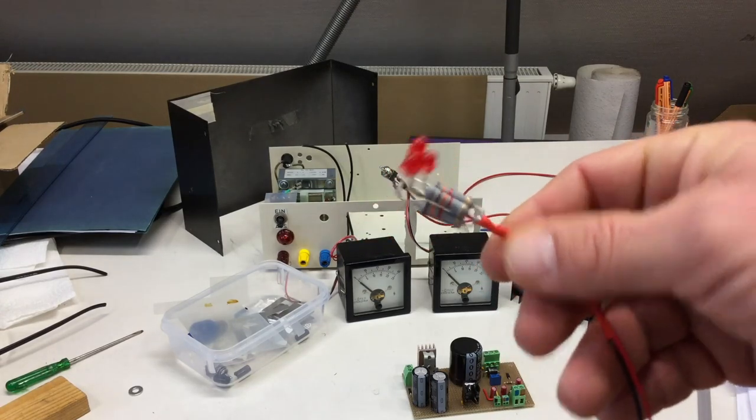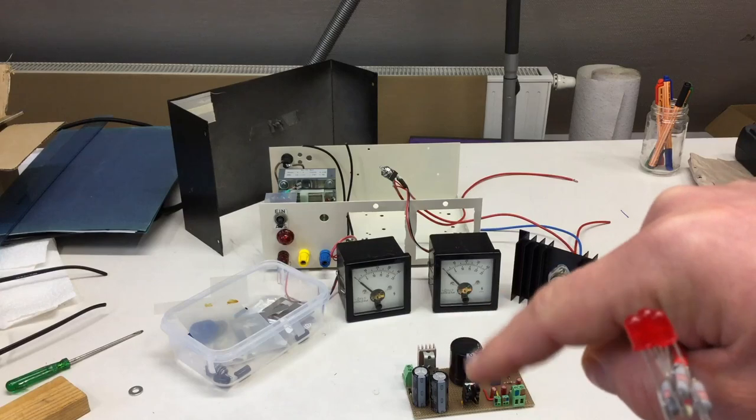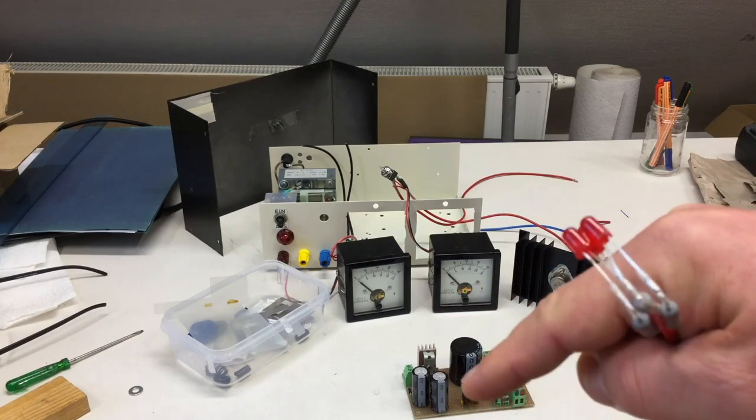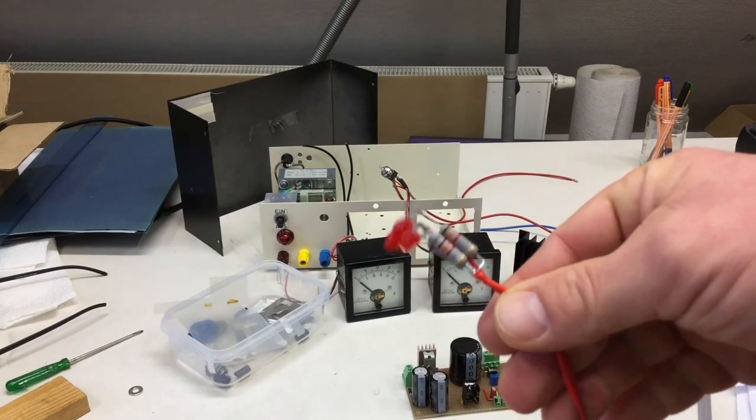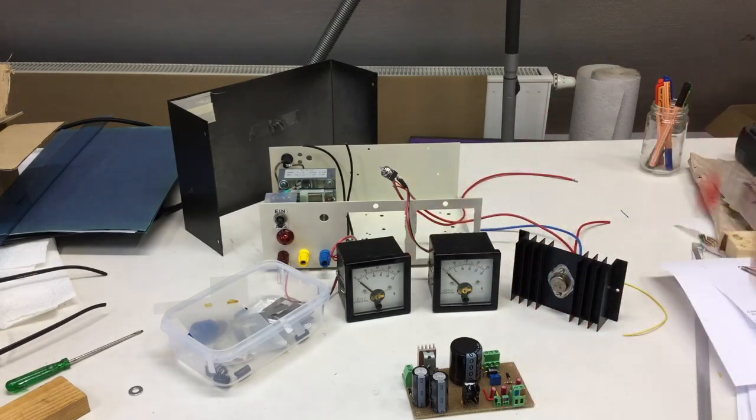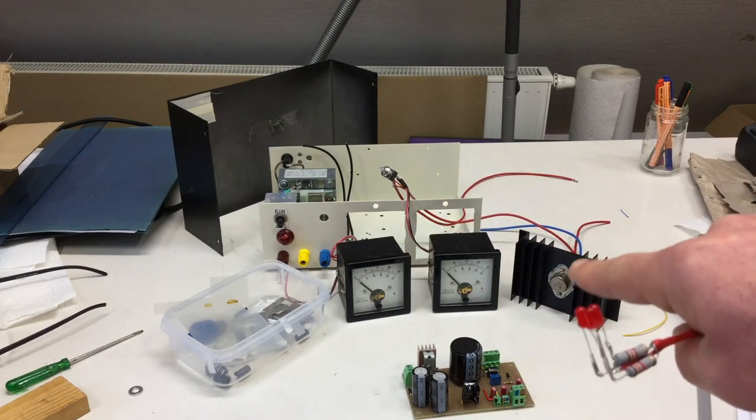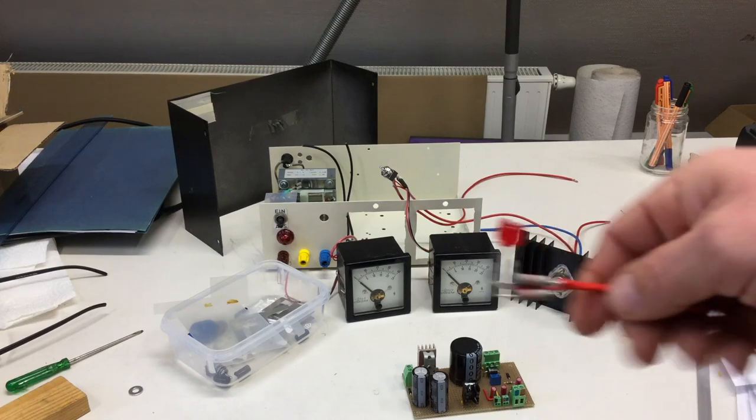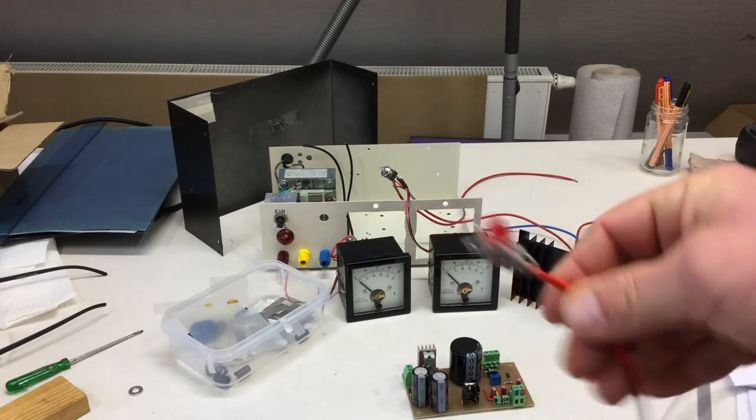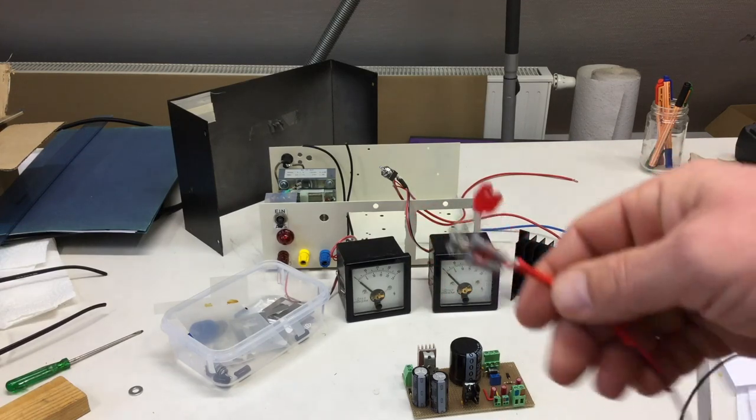I first want to check if the positive rail and the negative rail give the correct voltage. I don't want to blow up my nice LM317K steel regulator, because replacing that would be quite expensive.